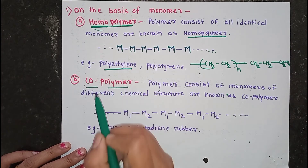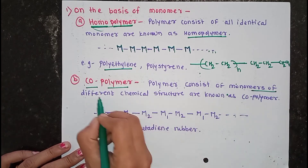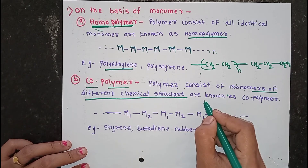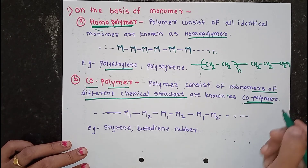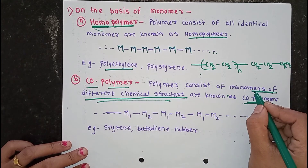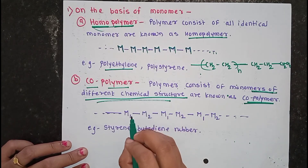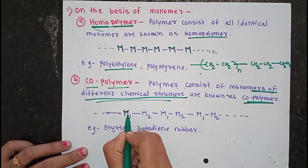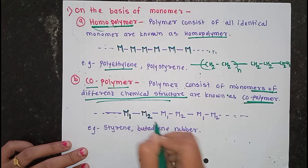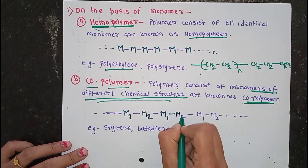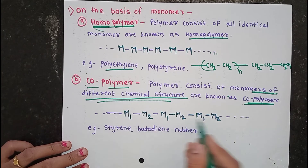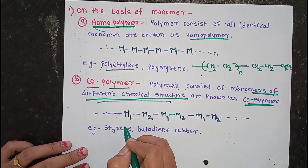The second type is the copolymer. A copolymer is a polymer which consists of monomers of different chemical structures. When monomers of different chemical structures are linked together in large numbers, the polymer produced is called a copolymer. In a copolymer, the monomers are not the same — they are differently structured and linked together.